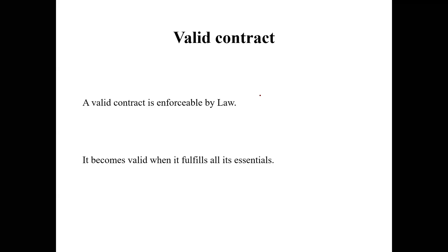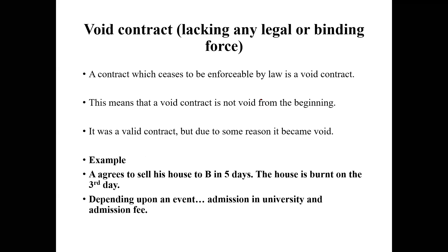The second type is the void contract, which is a little tricky to understand. A void contract is a contract which ceases to be enforceable by law — meaning it was a valid contract in the beginning, but because of certain reasons it became void. Once it becomes void, it is no longer enforceable by law.